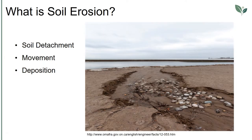Erosion, whether it is by water, wind, or tillage, involves three distinct actions: soil detachment, movement, and deposition. Topsoil, which is high in organic matter, fertility, and soil life, is relocated elsewhere on site where it builds up over time, or is carried off site where it fills in drainage channels. Soil erosion reduces cropland productivity and contributes to the pollution of adjacent watercourses, wetlands, and lakes. Soil erosion can be a slow process that continues relatively unnoticed, or can occur at an alarming rate, causing serious loss of topsoil.